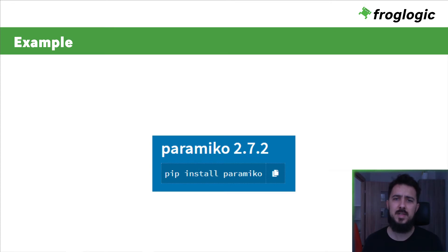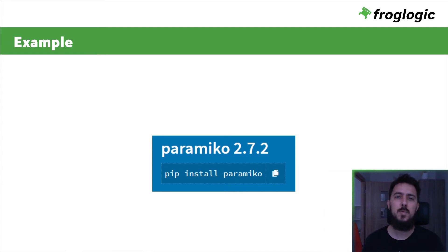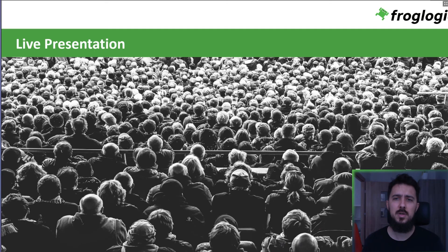Paramiko is one of those problematic packages that won't work with Squish's internal interpreter right away. Why would we want to use Paramiko in our scripts? With Squish's Remote System API, it's possible to execute shell commands on the remote machine where the Squish server is running. However, if Squish server is running locally and our tests are attached to an application running on an embedded device, our options are rather limited. And here, Paramiko — the Python implementation of the SSH v2 protocol — comes in handy. Let's try to introduce this package to our test framework with a few simple steps.